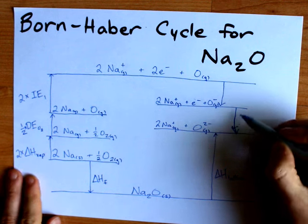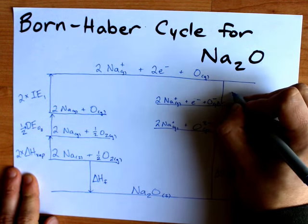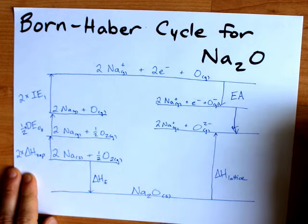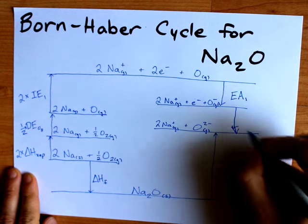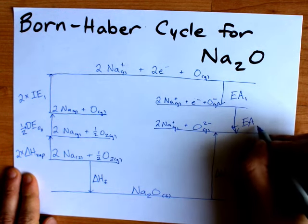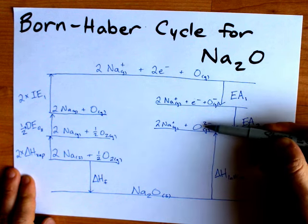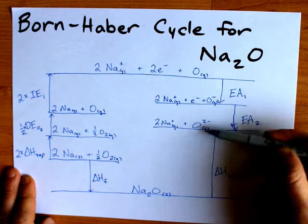I have actually separated out my two electron affinities. Electron affinity being the amount of energy released when you add electrons. Here is EA number one for oxygen, and here is electron affinity number two for oxygen, because it is adding a second electron to the already negatively charged O.